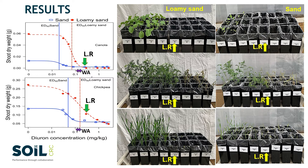According to the soil types and crop species, their shoot and root response to the herbicides varied. At the higher rate, more than 50% inhibition of all tested crop species was observed. On the other hand, the effective dose value of diuron herbicide in sand soil is much lower than in loamy sand soil. The reason that diuron herbicide is more phytotoxic in sand soil may be due to sand soil containing lower organic matter and cation exchange capacity compared to loamy sand soil. The diuron herbicide residues estimated for Western Australian paddocks are greater than or equal to the ED50 values in both soil types.